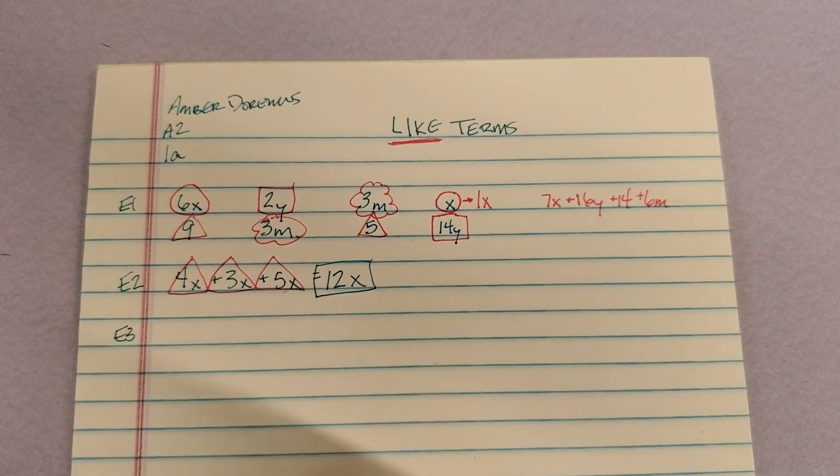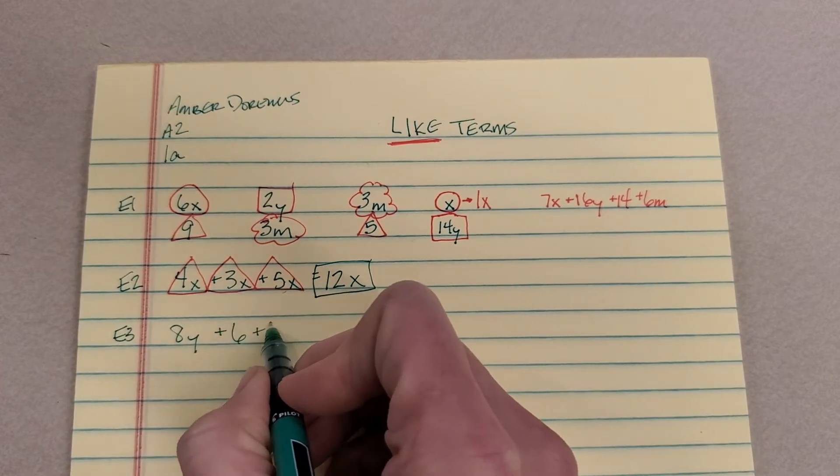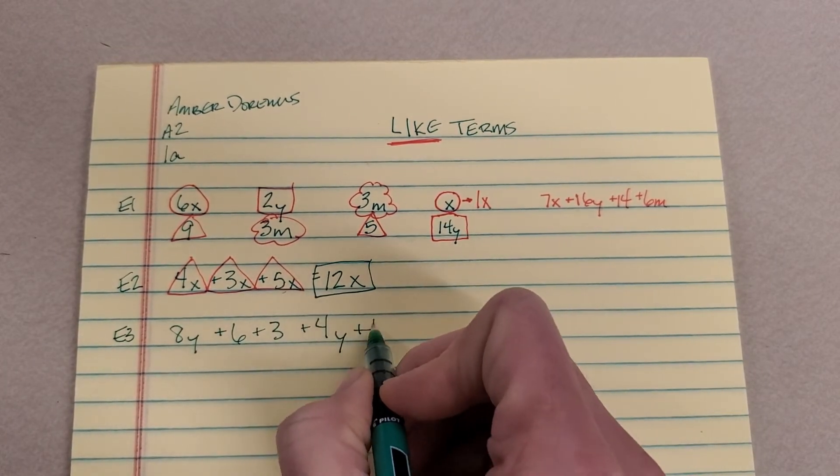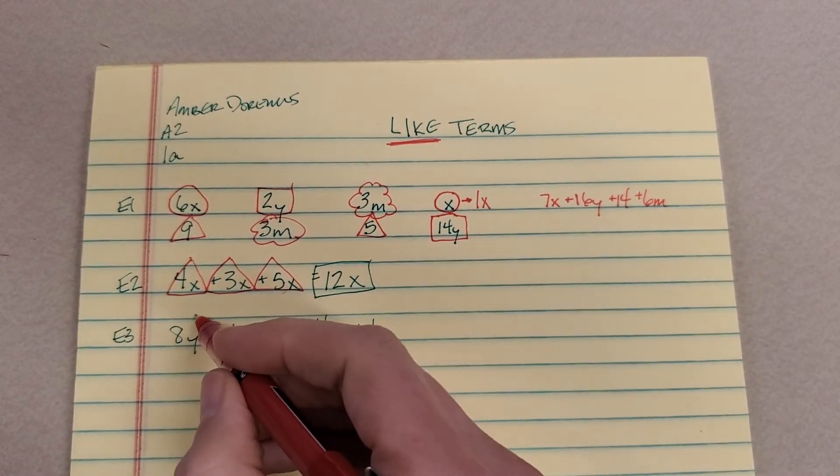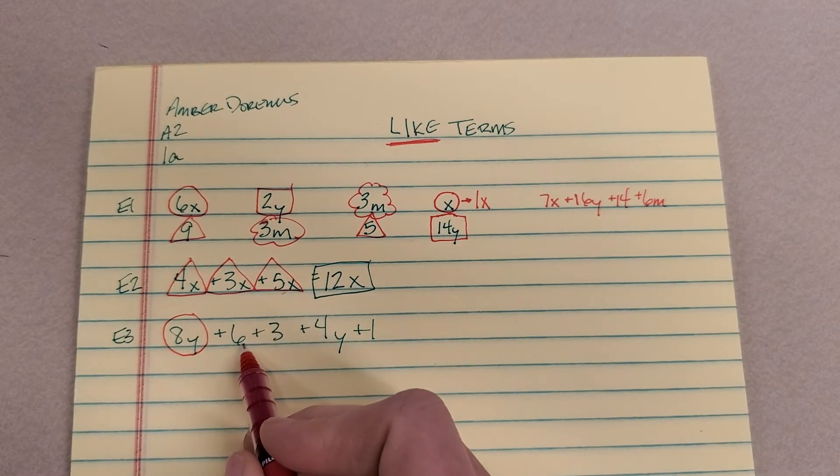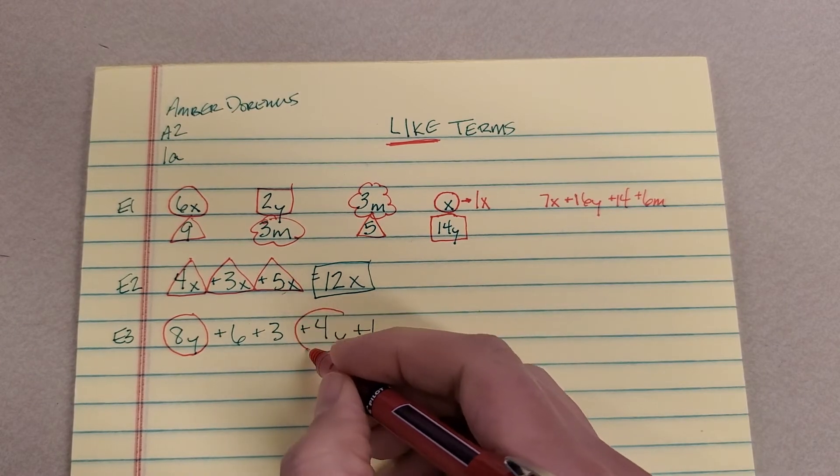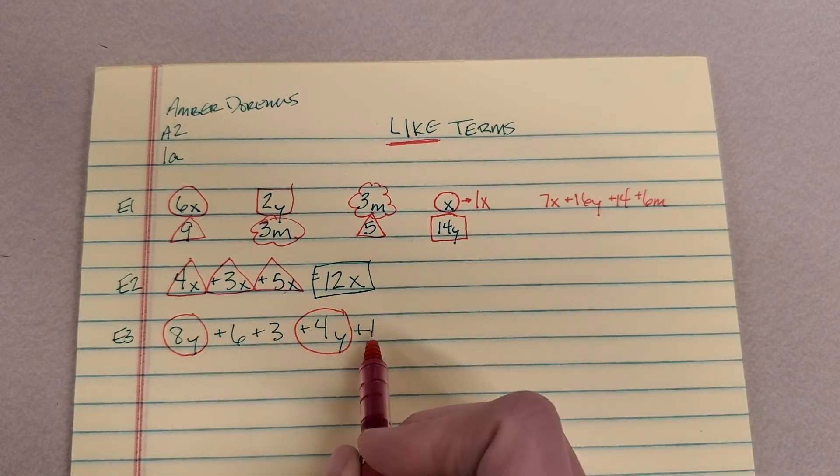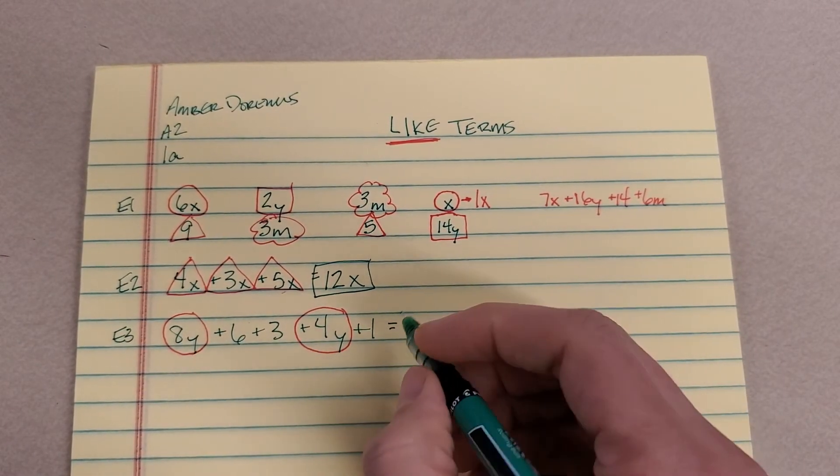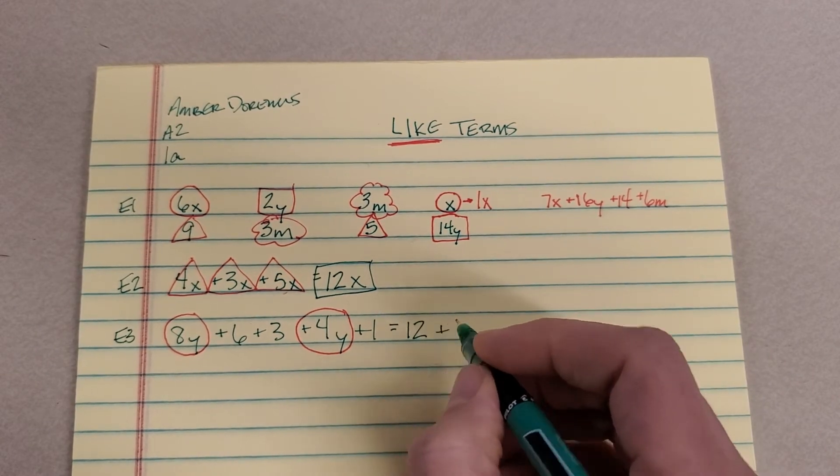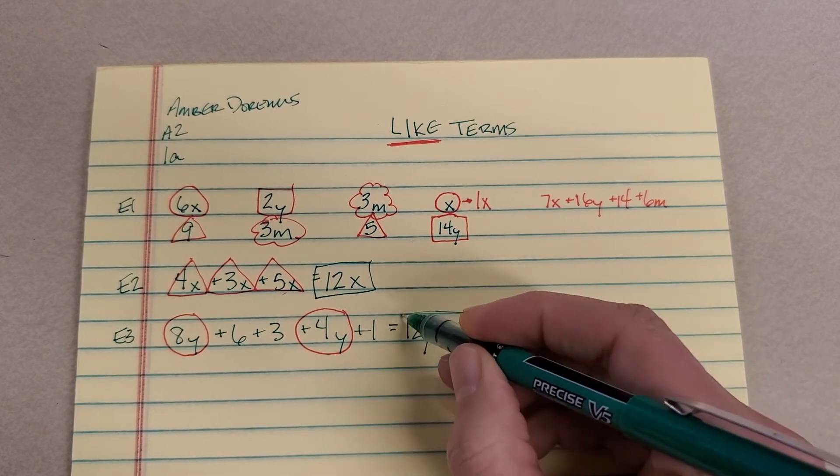Example 3. If I have 8Y plus 6 plus 3 plus 4Y plus 1, let's look for like terms. Here's some Y's. Are there any more Y's? Nope. Oh yeah, plus 4Y. And then all of these are constants. How many Y's? 8Y's and 4Y's is 12Y's. Six plus three plus one is 10. Oh, I forgot the Y. Don't forget the Y.